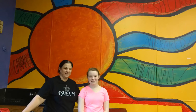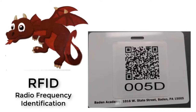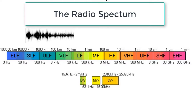In our lab, radio waves have a special significance. Our dragon tags operate on RFID — that is radio frequency identification. We partner with RAIN RFID in advocating ultra-high frequency UHF RFID.